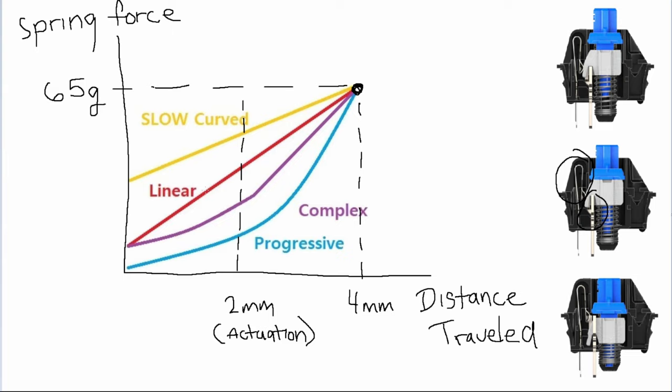A slow curve spring, shown in yellow here, is usually longer which starts with preload. That means that there's more force needed to start pushing the switch downwards. Slow curve springs have less variance between the starting and ending weights because of this preload.